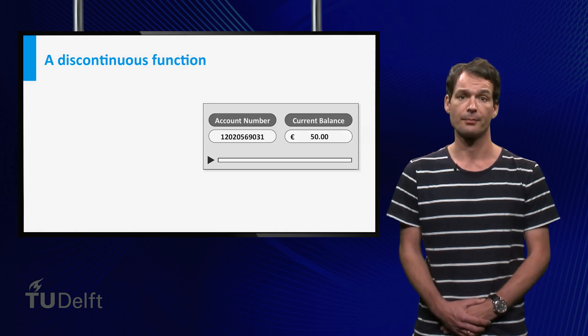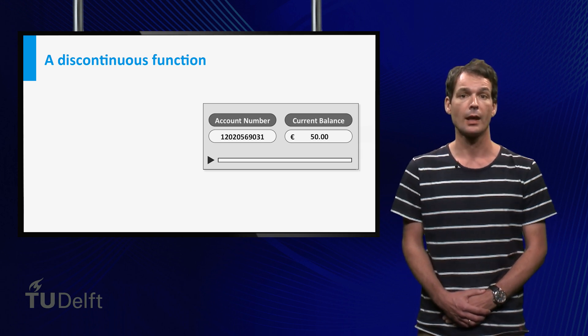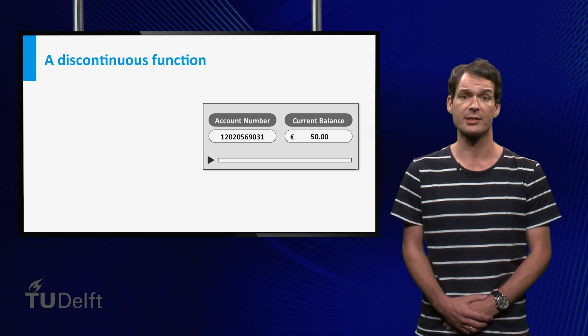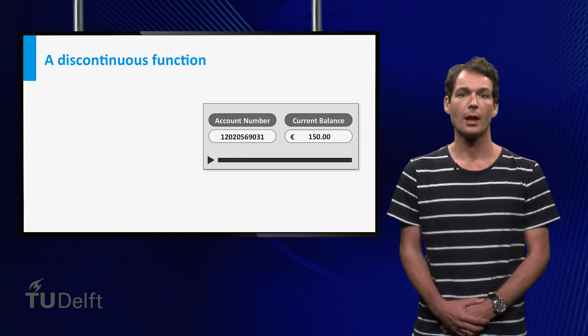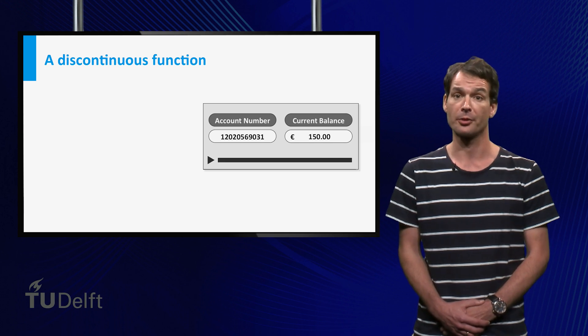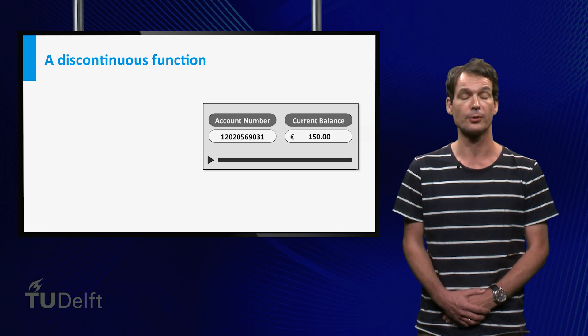Not every function is continuous. Suppose you make a film of the balance on your bank account. At a certain point you see the balance change from, say, 50 to 150. No matter how high the frame rate of your film is, the balance always jumps. The change will never look fluid.